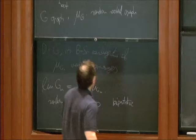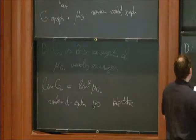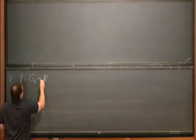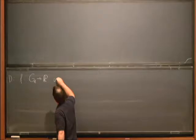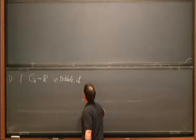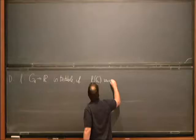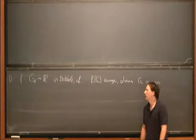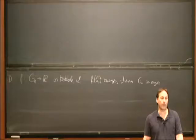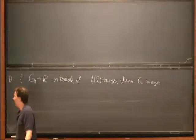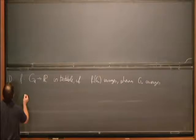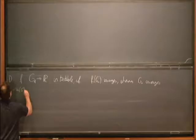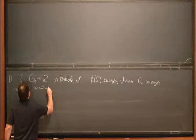Let's talk about graph parameters. A function from G_D to ℝ is testable if F(G_n) converges whenever G_n converges. That's a natural property: you want to know which parameters are continuous in this topology.